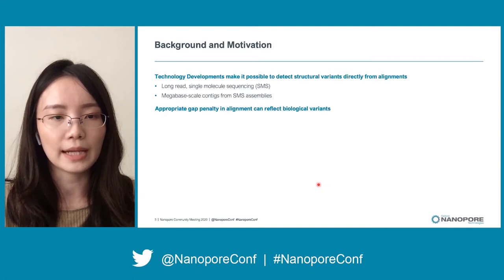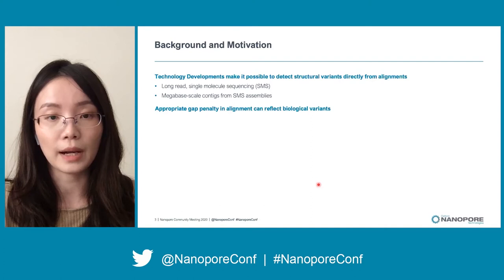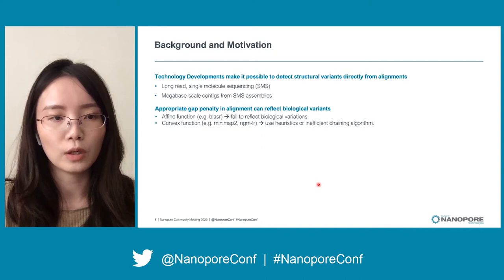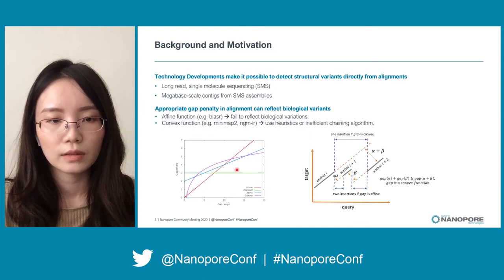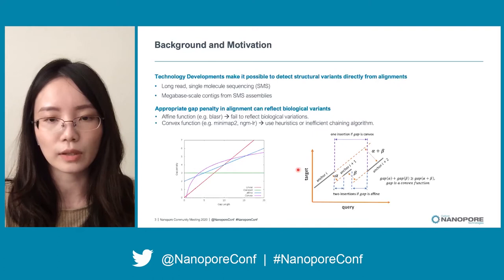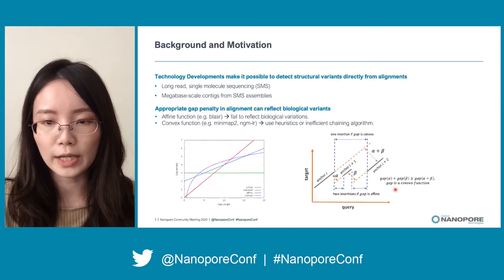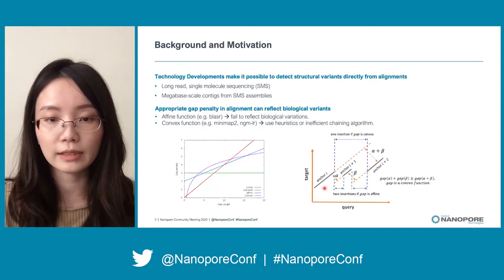When doing sequence alignment, choosing the appropriate gap penalty is very important, as it can correctly reflect the biological variance. The affine function and the convex function are two gap penalty functions that are commonly used. As shown in the figure, the purple line shows the shape of a convex function, and the blue line shows the shape of an affine function. Different gap penalty functions would result in different alignments across the SV event. For example, here we have three exact matches.